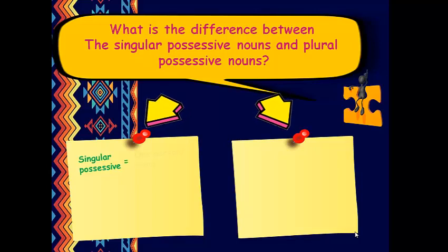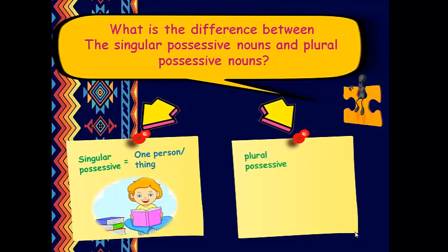The difference between the singular possessive nouns and the plural possessive nouns is that, first, singular possessive: you have one thing owning some stuff. The plural possessive: you have multiple things owning some stuff.